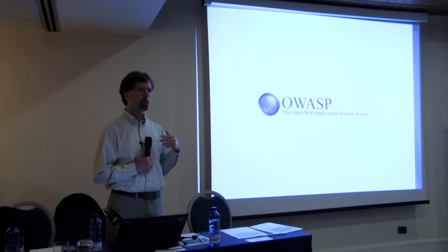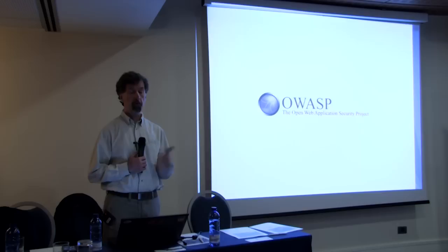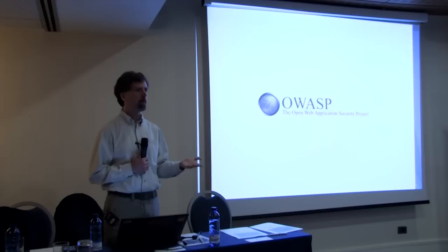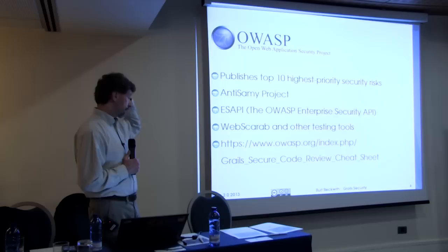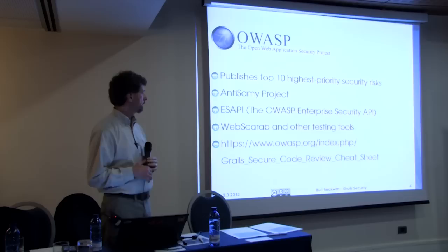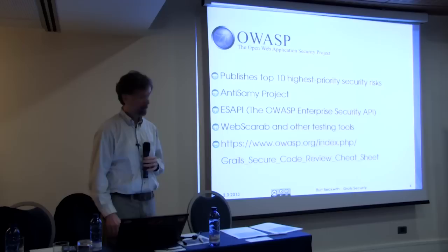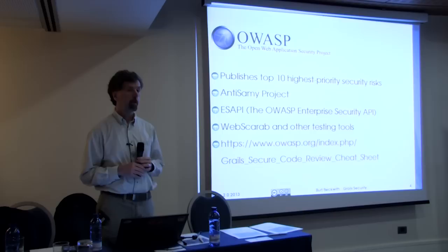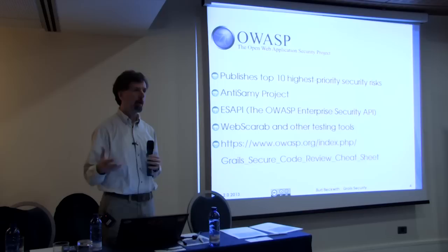For example, URL-based security is currently number six, because although allowing access to a section of your site that you shouldn't is a potentially severe problem, it's an easy one to implement. OWASP is a very big organization with a lot of sub-projects. They publish a library called Anti-Sami, their ESAPI, testing tools like WebScarab, and code review cheat sheets. Someone has even started a Grails security checklist on their wiki.